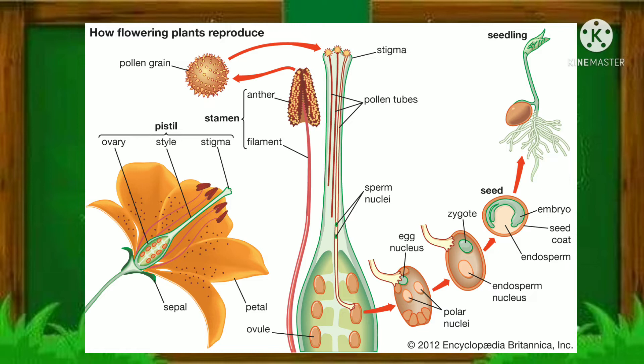The stigma is the swollen structure at the end of the style. The style is a long, sticky, slender tube. The ovary is the enlarged basal portion of the pistil, which contains the ovules. The stamen is the male organ of the flower. It has two parts: the anther and the filament. The anther is made up of two lobes that contain the pollen sacs. The filament holds the anther in a position tall enough to release the pollen.